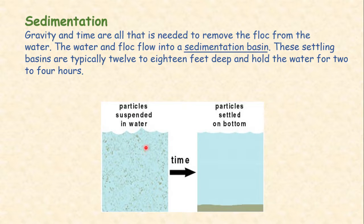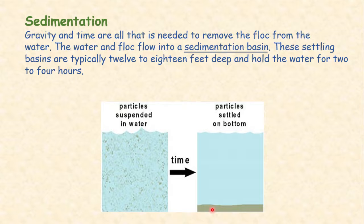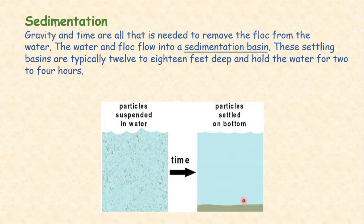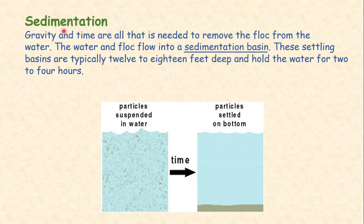In sedimentation, small particles are suspended inside the water and need time to settle at the bottom. Gravity and time are needed to remove the floc from the water. The water and floc flow into a sedimentation basin. These settling basins are 12 to 18 feet deep and hold the water for 2 to 4 hours. The time can vary according to the situation. The fine or suspended particles settle at the bottom — this is named sedimentation.